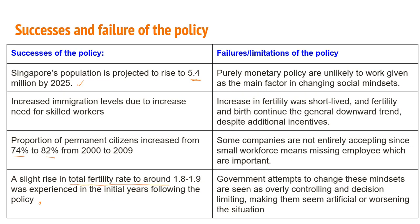The failures of the policy include that it is a purely monetary policy and is unlikely to work given that changing social mindset is the main factor. The increased fertility was short-lived and fertility continued the general downward trend despite additional incentives. Some companies are not entirely accepting since employees on maternity leave are missed in the small workforce. Government attempts to change mindset are seen as overly controlling and decision-limiting, making them feel artificial, as people feel they have a right to not have many children.